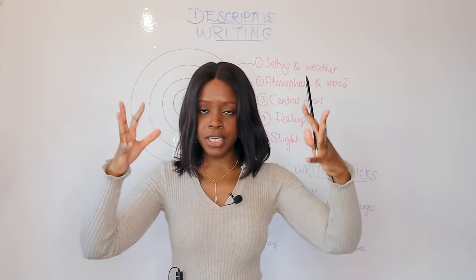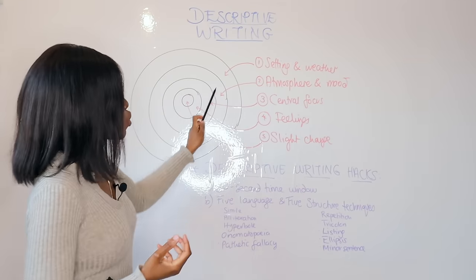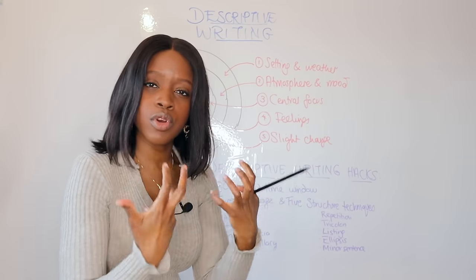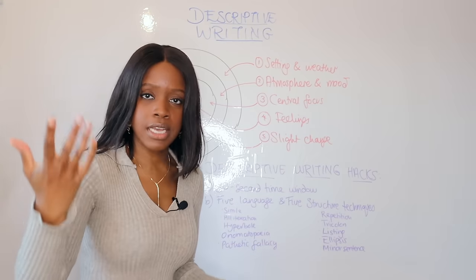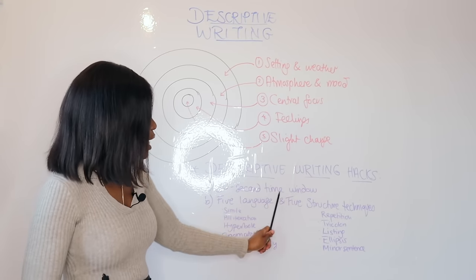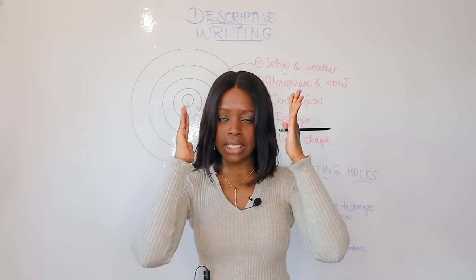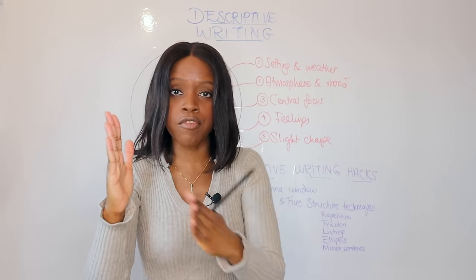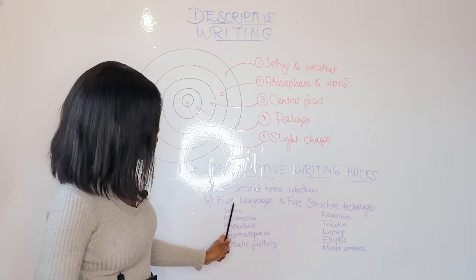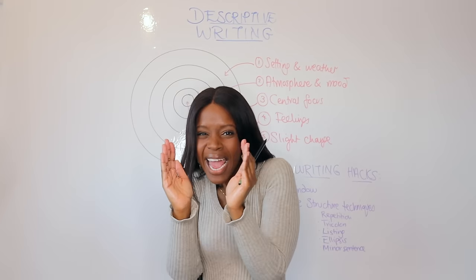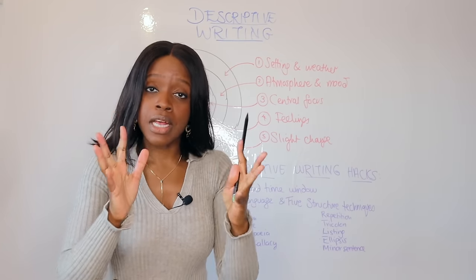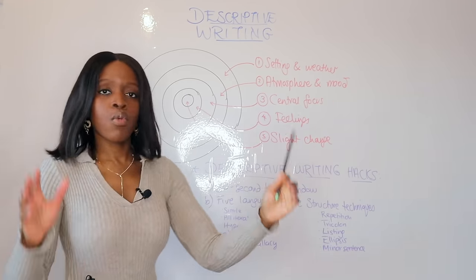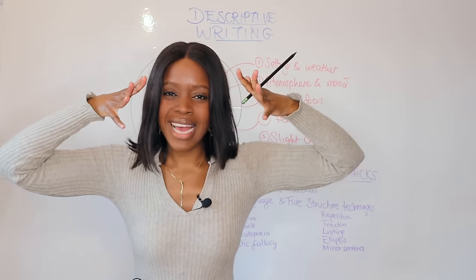I'd like to suggest two hacks for descriptive writing. The first is to think about your image or question in a 30-second time window. If you took a real snapshot of that specific moment, what could happen within those 30 seconds? And the ever so slight change in your final paragraph could be what happens just after those 30 seconds — a tiny extra shift. Think about how you can describe your scene within that 30-second time frame.